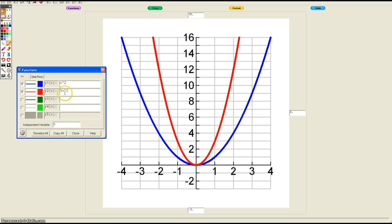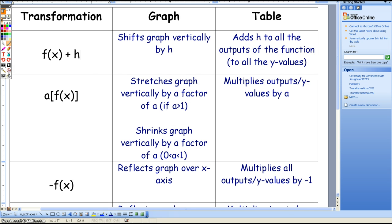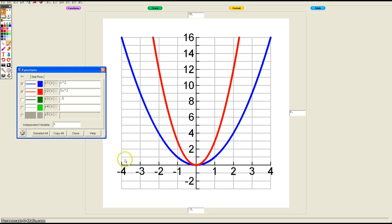It multiplied our outputs by 3. For comparison, I'm going to make my a here 0.5 and see what that does. So 0.5 times f(x). Just to keep everything straight...